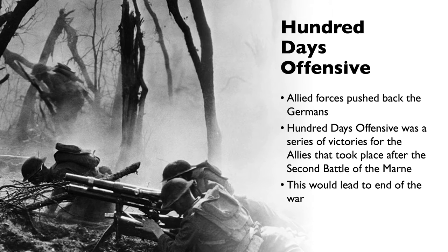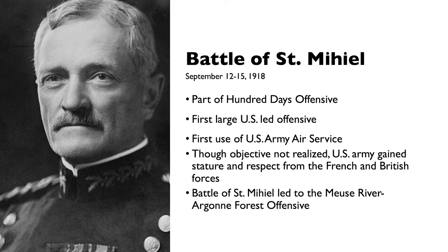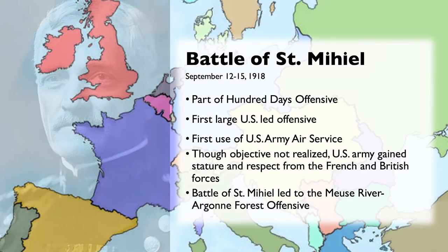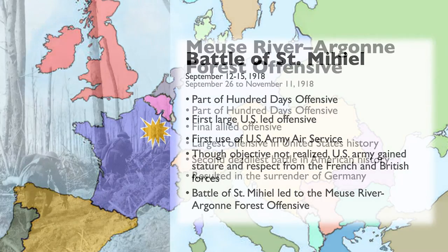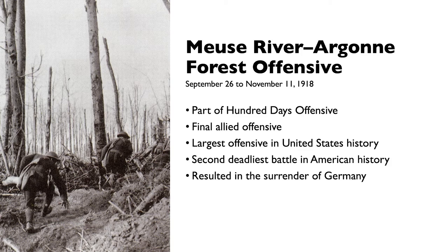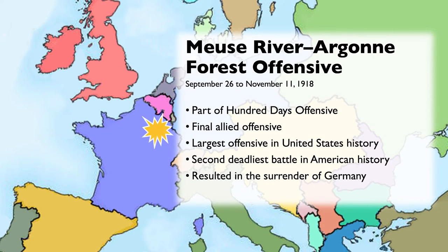The Battle of Saint-Mihiel was part of the Hundred Days Offensive and was the first large U.S.-led offensive in World War I. It was the first use of the U.S. Army Air Service, which would later become the U.S. Air Force. Though the objective was not fully realized, the U.S. Army gained stature and respect from the French and British forces. This battle led to the Meuse-Argonne Forest Offensive — also part of the Hundred Days Offensive — which was the final Allied offensive, the largest offensive in U.S. history, and the second deadliest battle in American history, with a fatality rate of 40%. It resulted in the surrender of Germany.